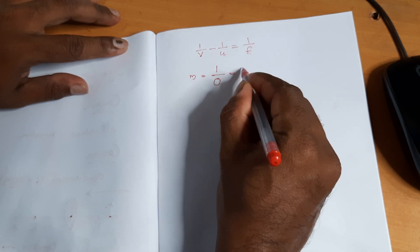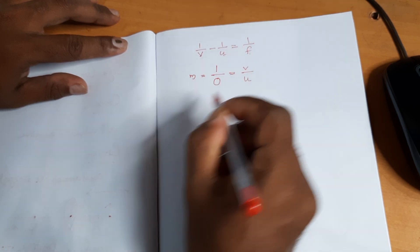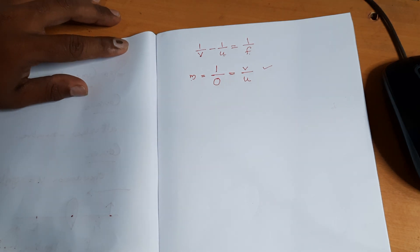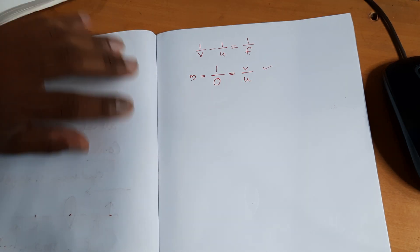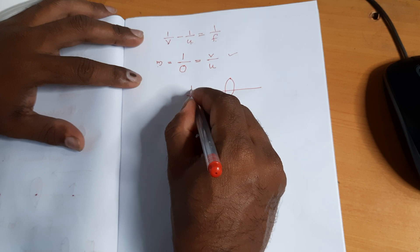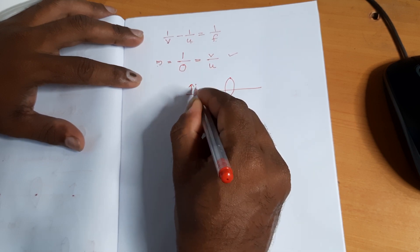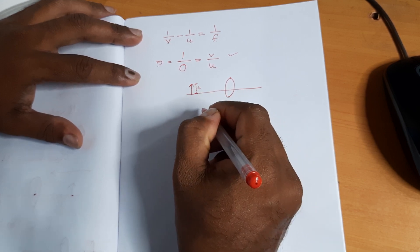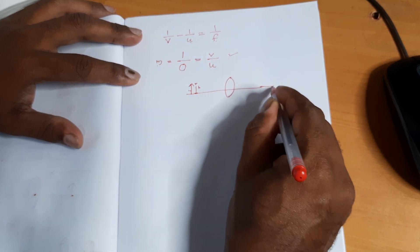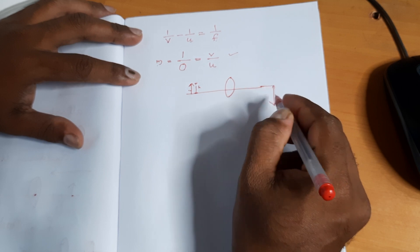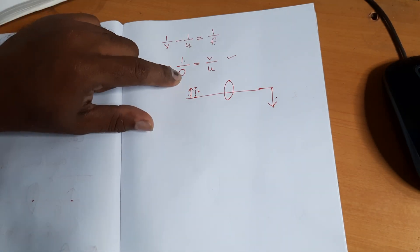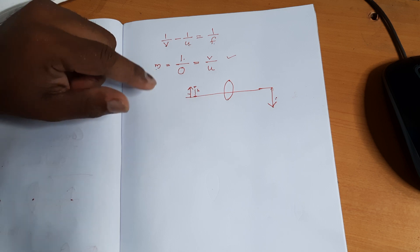Linear magnification M is also equal to the distance of image divided by distance of object. This is the linear magnification — the size of the image divided by the size of the object. For an object formed by a convex or concave lens, I divided by O gives the magnification.